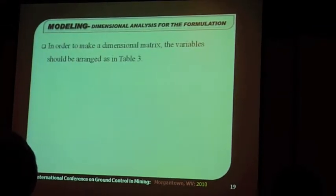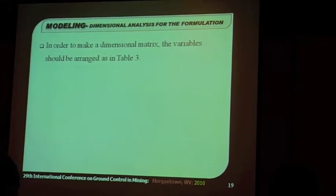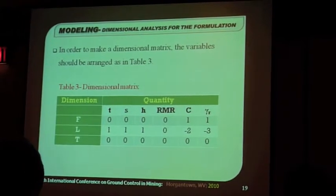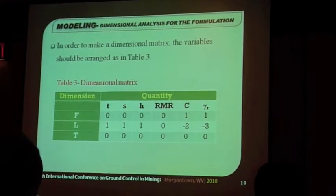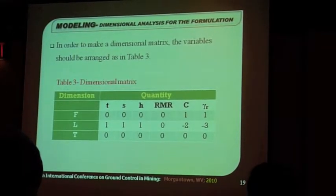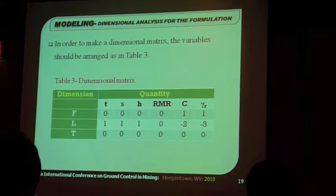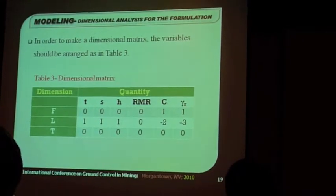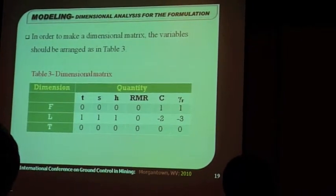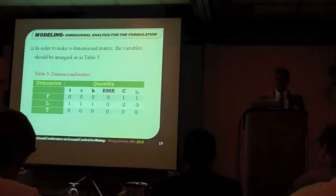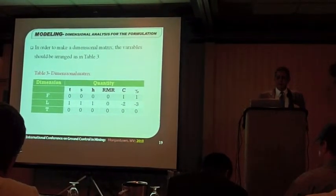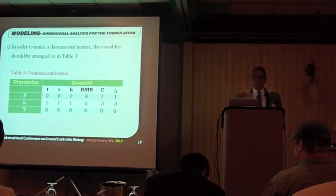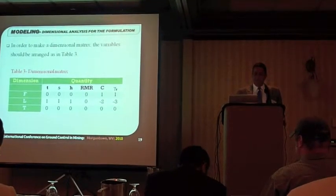In order to make a dimensional matrix, the variables should be arranged as in this table. So, all our variables are at the top, T, S, H, RMR, C, and F, L, T are the dimensions of the force system. And all the numbers, as you can see, are exactly according to the previous table, the dimensional matrix.